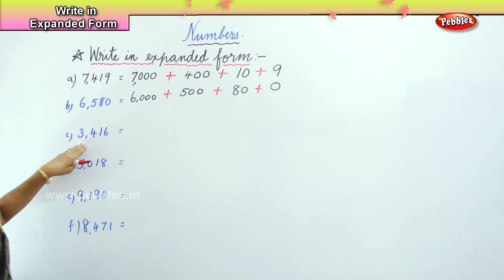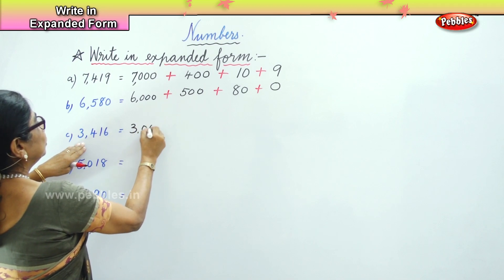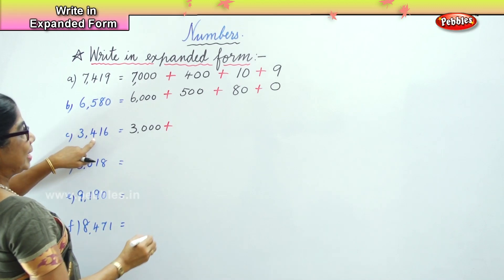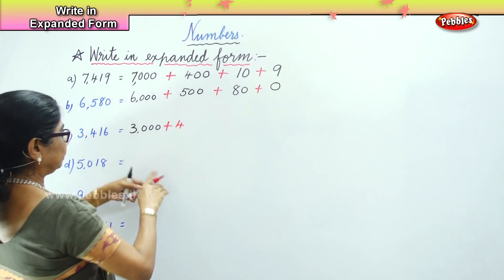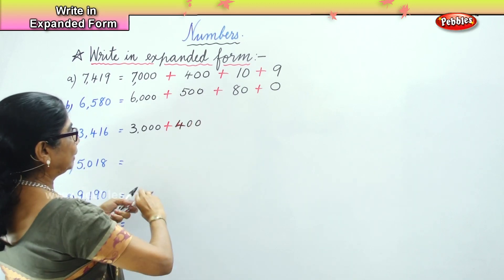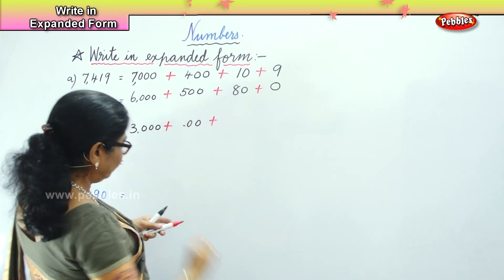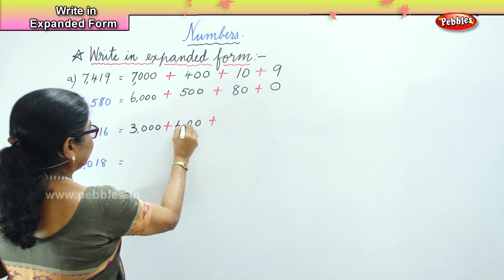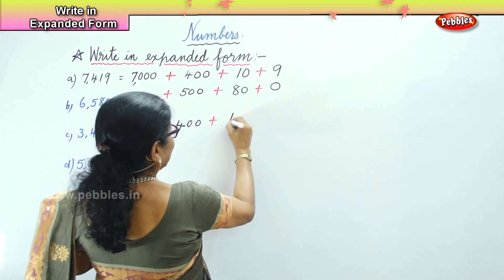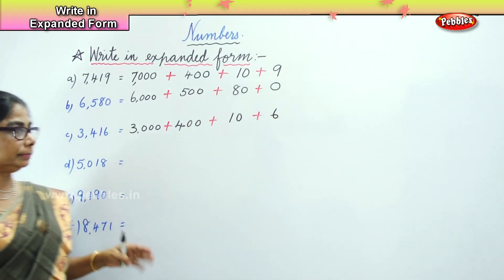Next you have 3,4,1,6. How many thousands? Three thousand, plus four hundred, plus ten, plus six.